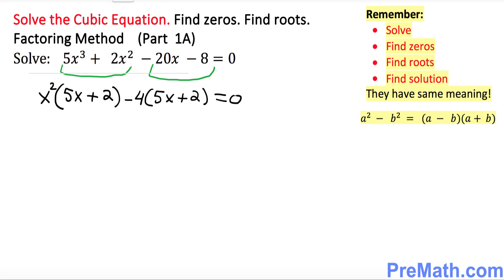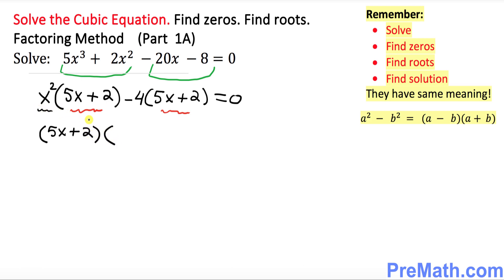Set it equal to 0. Now look at these two parentheses — they are both the same. So what we're going to do is bring what's inside the common parentheses outside. I'm going to write 5x plus 2 outside, and then whatever remains — x squared minus 4 — and set it equal to 0.